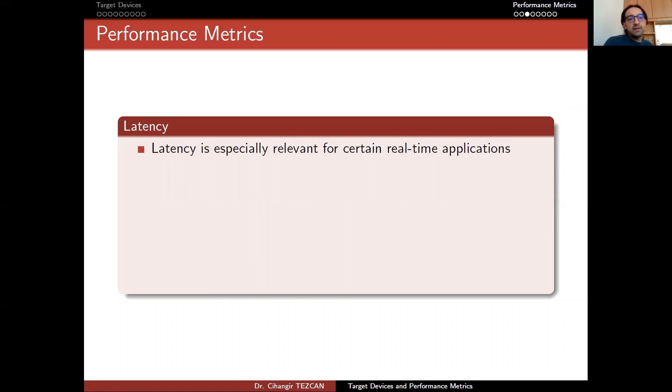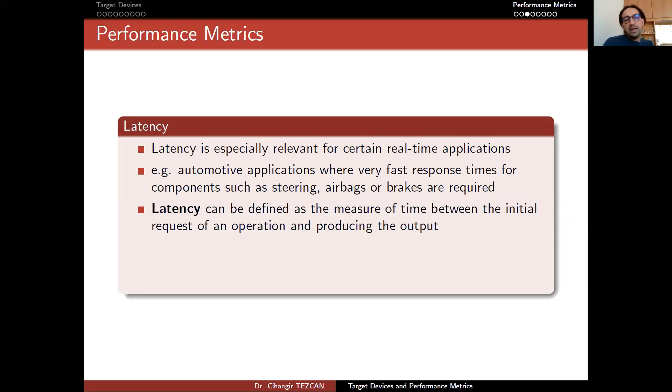Let's move on to latency. Latency is especially relevant for certain real-time applications, especially in the Internet of Things. For example, automotive applications where very fast response times for components such as steering, airbags, or brakes are required. Latency can be defined as the measure of time between the initial request of an operation and producing the output.